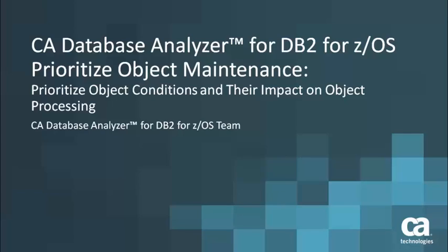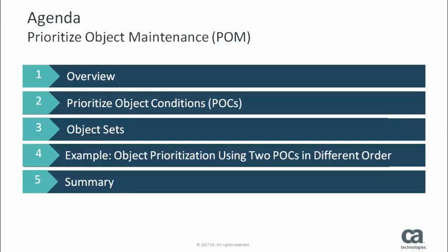Welcome to the CA Database Analyzer for DB2 for ZEOS video. This video focuses on key aspects of the Prioritize Object Maintenance feature. We'll start with an overview of the feature and then zero in on how CA Database Analyzer prioritizes the objects for maintenance. We'll explore Prioritize Object Conditions, Object Sets, and their impact on object processing. We'll review an example and then summarize what we've learned.